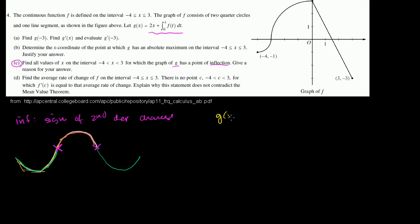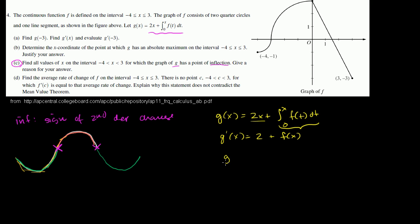And to think about that, we have to find its second derivative. So g of x is equal to 2x plus the definite integral from 0 to x of f of t dt. g prime of x is equal to 2 plus — by the fundamental theorem of calculus — f of x. And the second derivative g prime prime of x is equal to f prime of x. So asking where the second derivative has a sign change is equivalent to asking where the first derivative of f has a sign change.